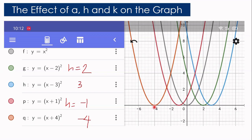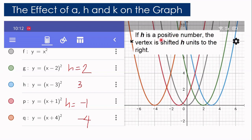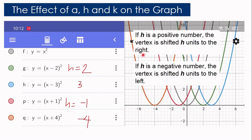To conclude the effect of H on the graph: if H is positive, then the vertex is shifted H units to the right. If H is a negative number, then the vertex will shift H units to the left. For example, if H is negative 7, the graph will shift 7 units to the left.